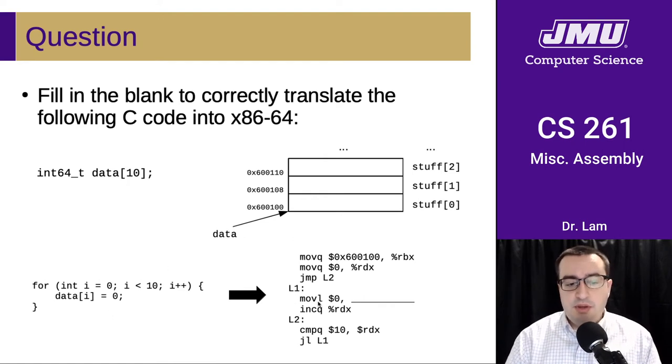Okay, so again, remembering that this should really be move Q and not move L, we want to use scaled indexed addressing mode. The base here is just the base of the entire array, so that's going to be RBX. The index register is RDX. This is going to go from zero up to, but not including 10, which is the indices that we would use in the C code to access that. So that's the index register. Then the scale factor is the size of the data in the array. Since we know that they're 64-bit integers, each of them is eight bytes wide. So this is the memory operand that will implement this C code using this assembly code.